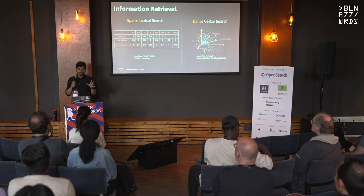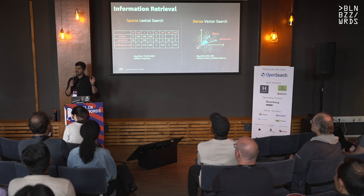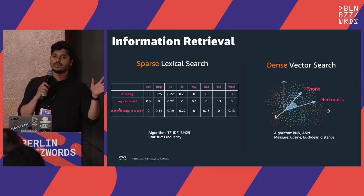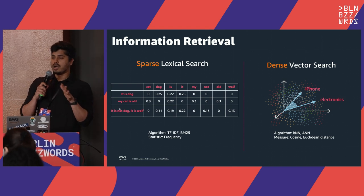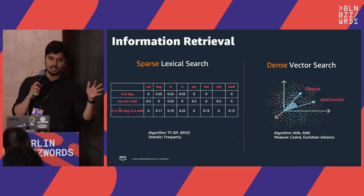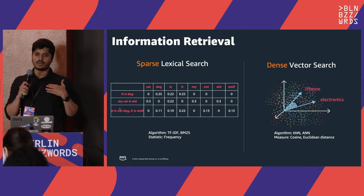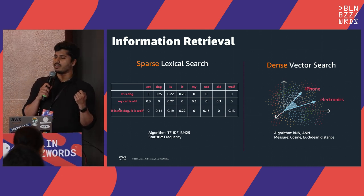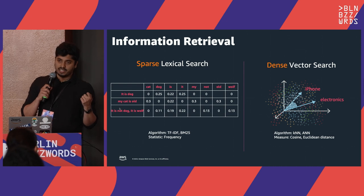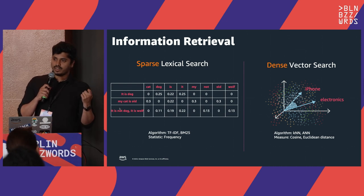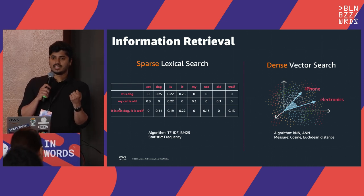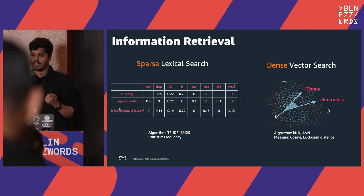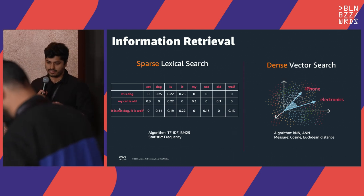In sparse retrieval, you have an inverted index with a vocabulary containing the unique list of tokens across your entire corpus, and you have the list of documents that you indexed. Your score is generated between every unique token and every unique document in your corpus, based upon term frequency and inverse document frequency — that's the TF-IDF algorithm, or the enhanced version, BM25.